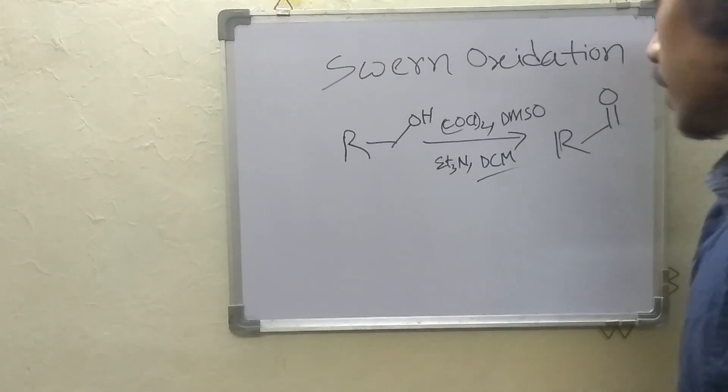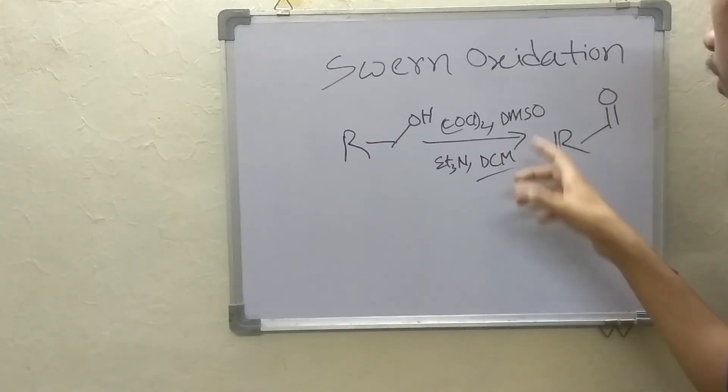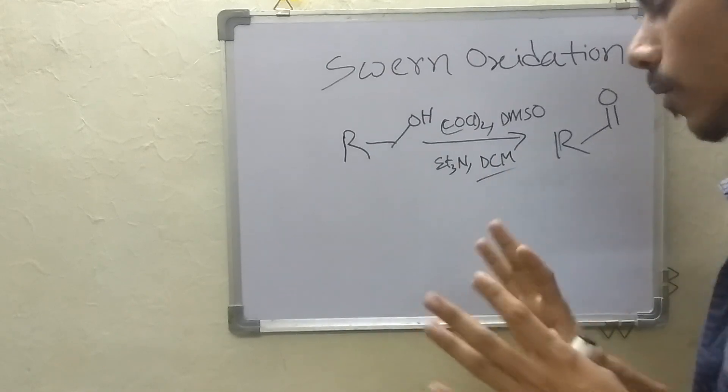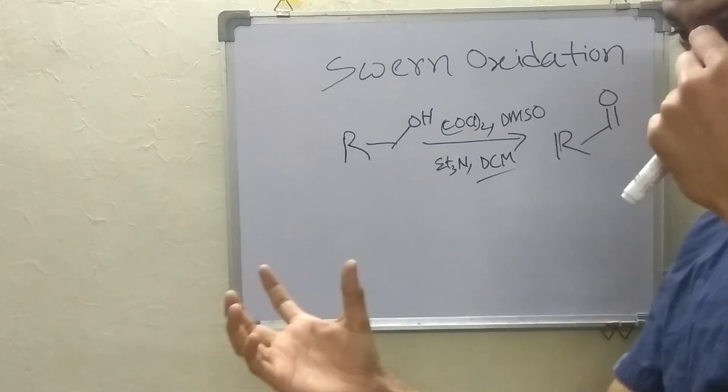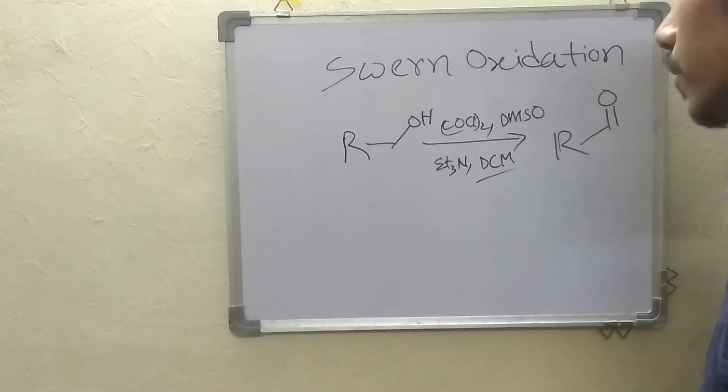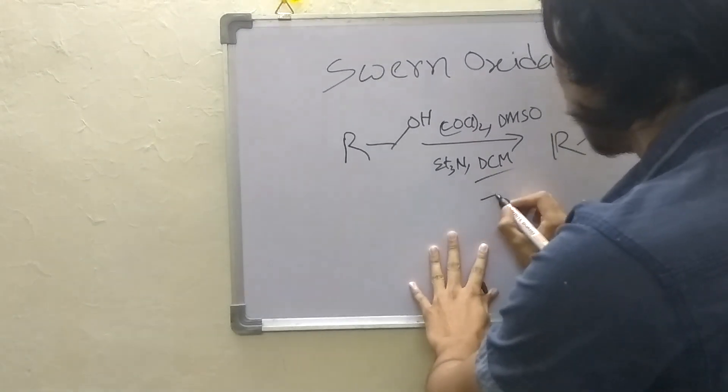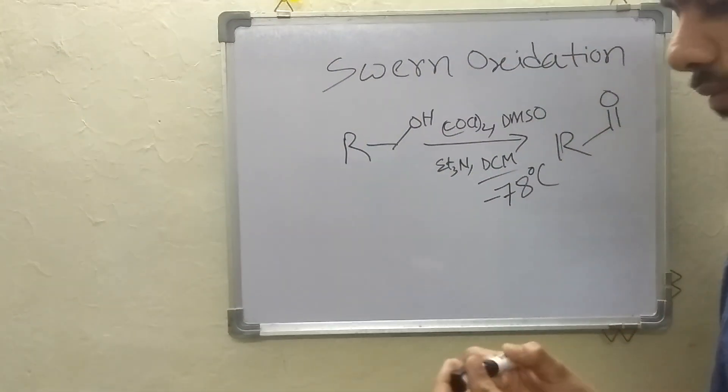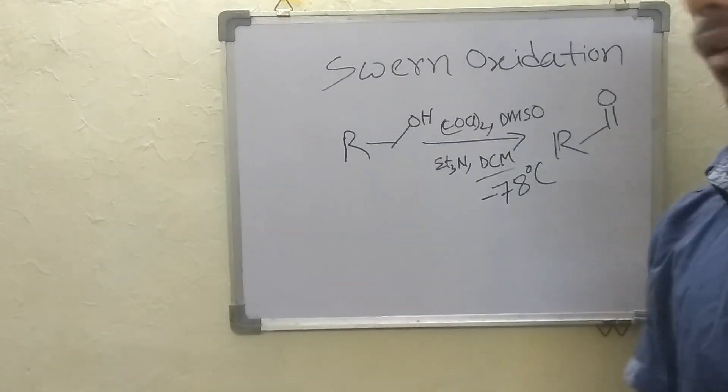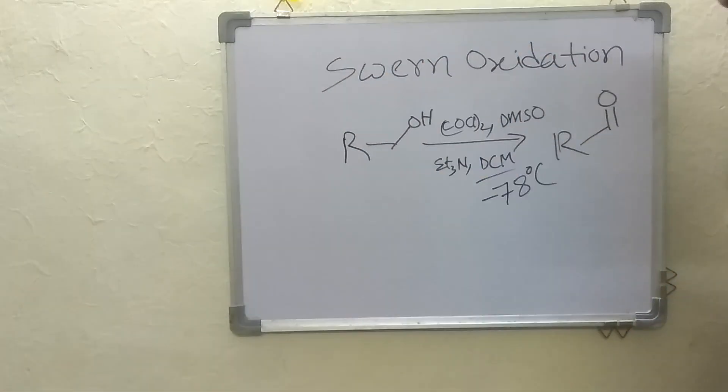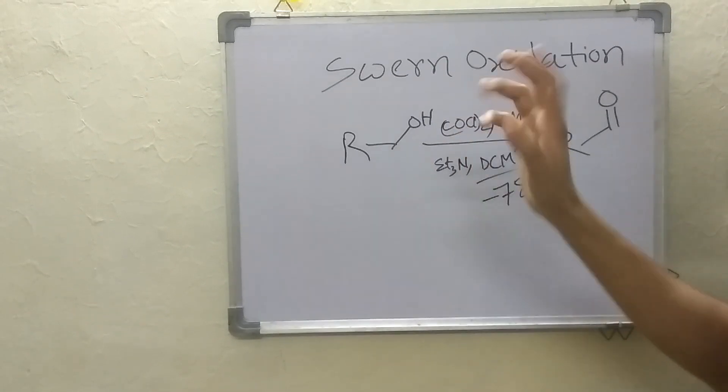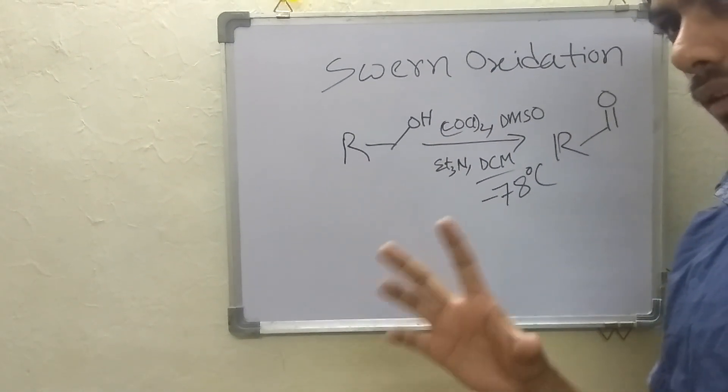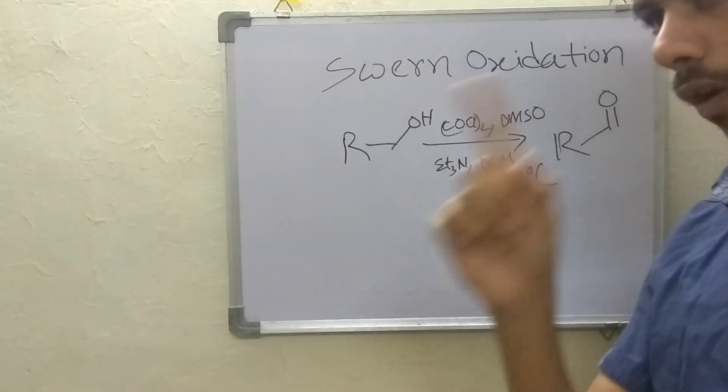In this case, what we do is that at first DMSO is taken in RB with DCM solvent and it is kept at minus 78 degree centigrade. The temperature for this reaction is minus 78 degree centigrade. And after around 10 to 15 minutes the oxalyl chloride is added and at that time carbon dioxide is evolved in the reaction.